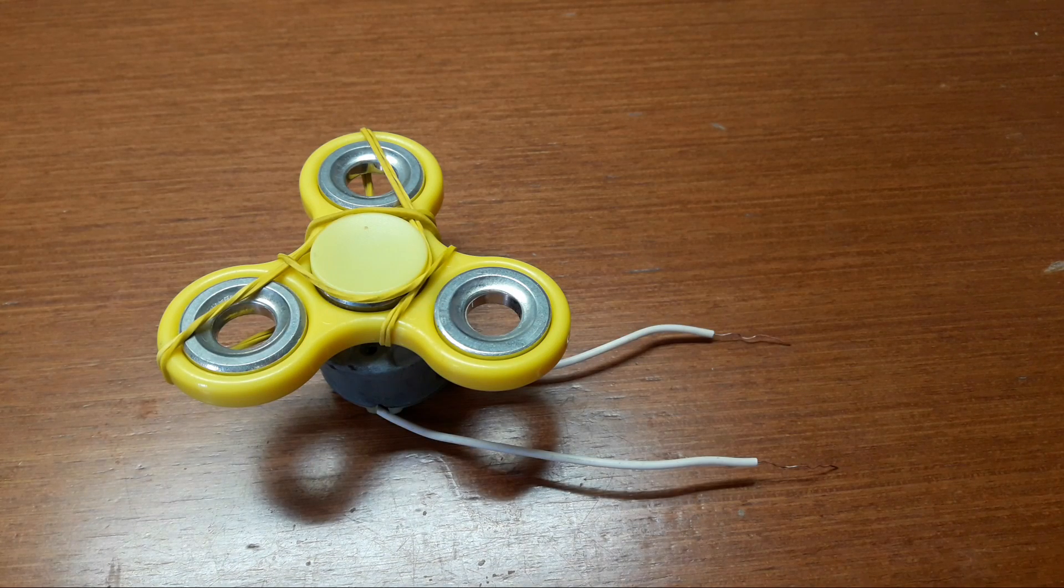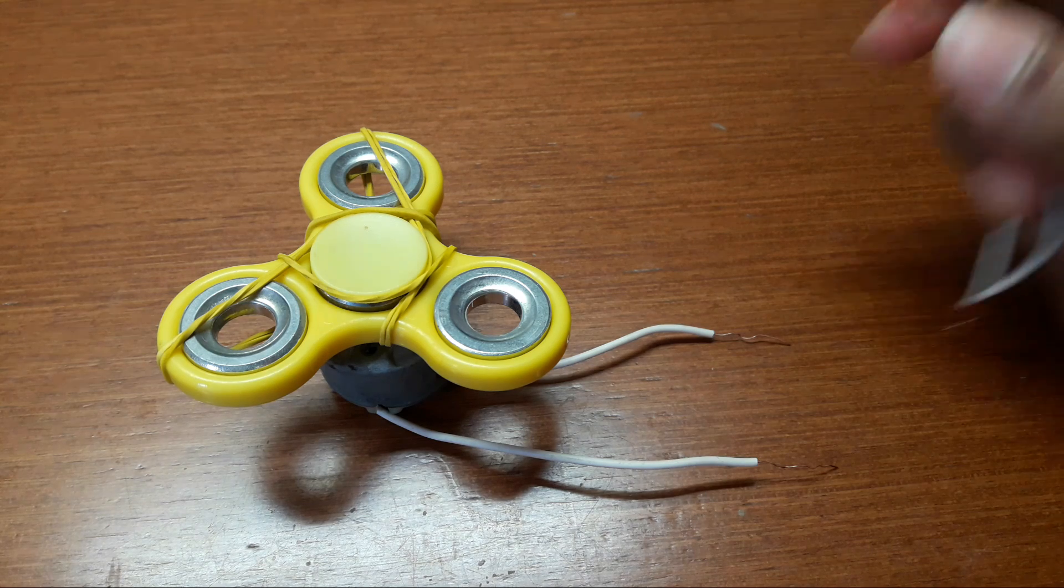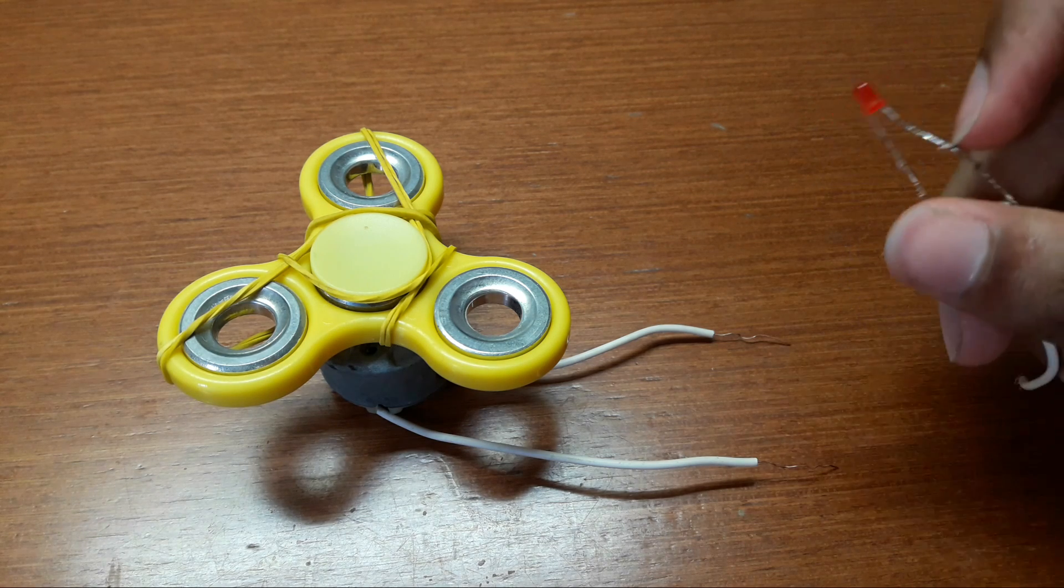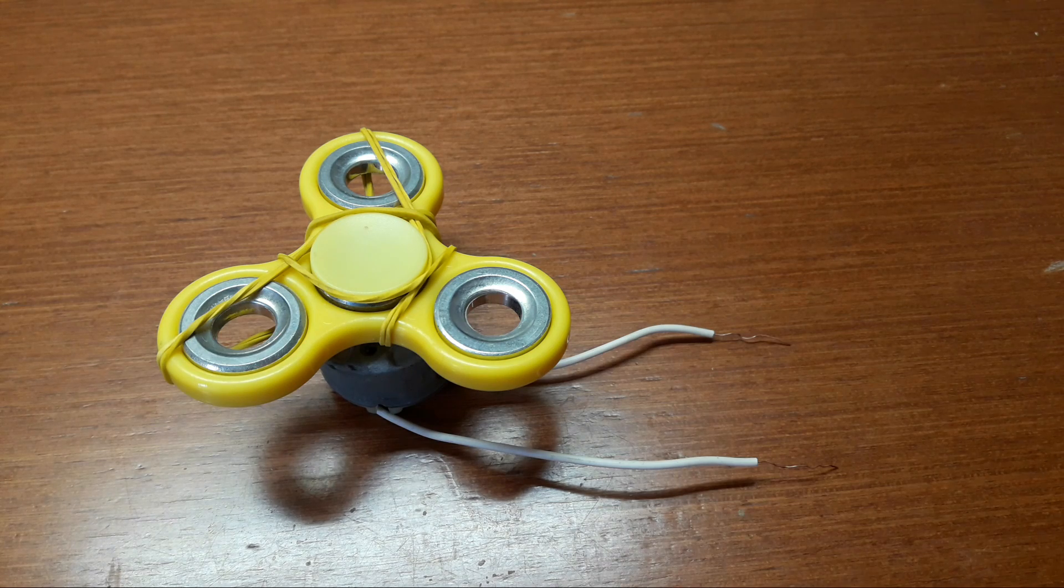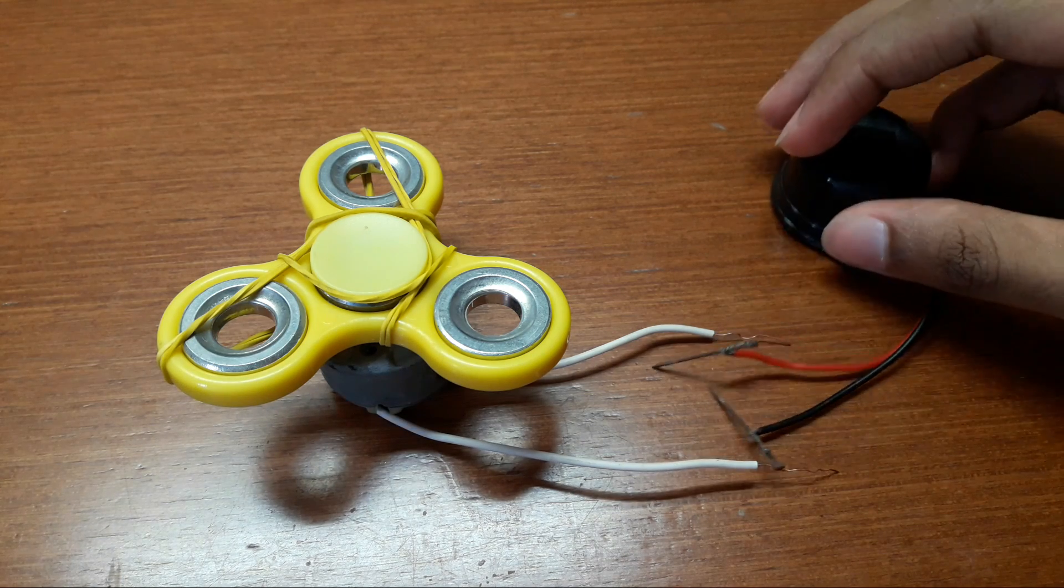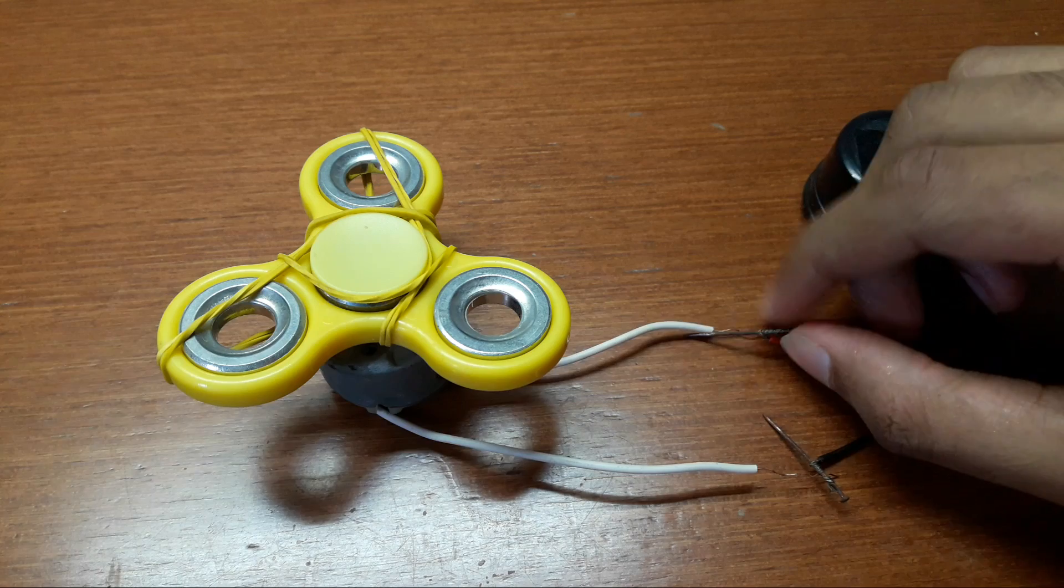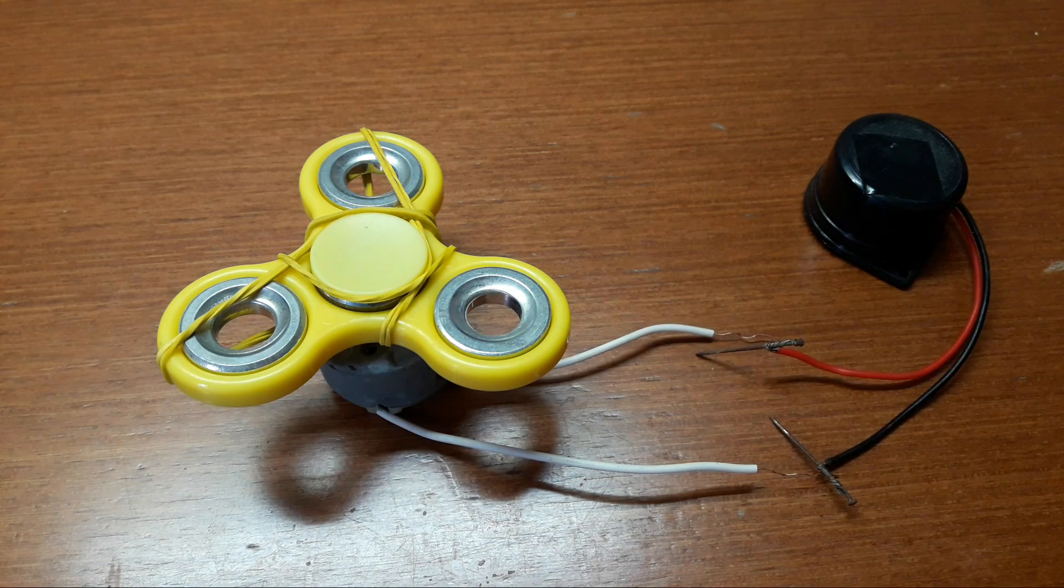So the fidget spinner didn't produce enough electricity to light up this LED, so I'm going to try it with the buzzer. Now in place of the LED, we will connect the buzzer at the two ends of the DC motor.